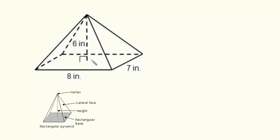I have a rectangular pyramid, so we're going to use this formula: volume equals one-third the area of the base times the height of the pyramid.